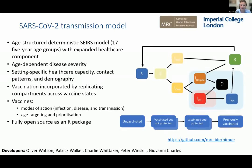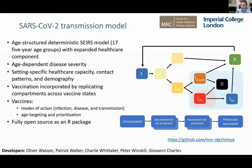This is an age-structured deterministic model with 17 five-year age groups. We have age-dependent disease severity and setting-specific healthcare capacity. Importantly, we incorporate vaccination by replicating all disease compartments across different vaccine states — from unvaccinated, to vaccinated but not protected, to vaccinated and protected, and then previously vaccinated. At the time we developed this model, we didn't have a vaccine available yet, so we were looking at broad categories of efficacy against infection, against disease, and against transmission for an unknown vaccine. This model is also fully open source as an R package.